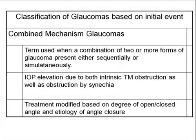Finally, combined mechanism glaucomas are typically defined as individuals who have two or more forms of glaucoma occurring either sequentially or simultaneously. The most common scenario is an individual who comes in with elevated pressures and a narrow angle, has an iridotomy performed, and the angle is then opened — but pressures still remain high without obvious PAS formation or chronic angle closure. They can't be defined as an angle closure patient because the angle is now open, yet it wouldn't be proper to define them as primary open-angle glaucoma. This can also apply to IOP elevation due to intrinsic trabecular meshwork obstruction as well as obstruction by synechiae.